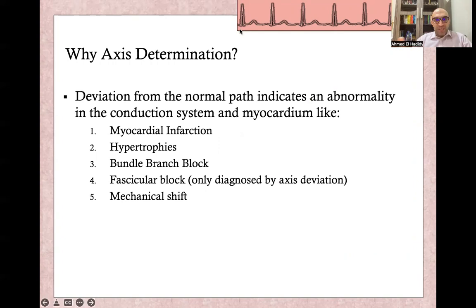So why is it important to determine the axis? Because deviation from the normal path indicates an abnormality in the conduction system and myocardium. So it's very important in cases like myocardial infarction, hypertrophy, bundle branch block, fascicular block — which is only diagnosed by axis deviation — and mechanical shift.